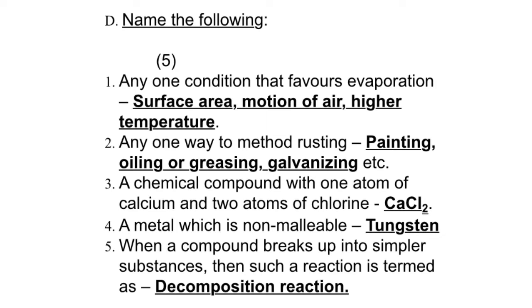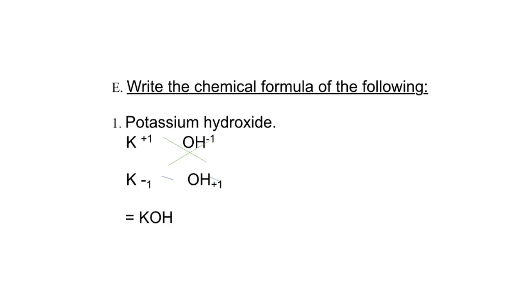Third, a chemical compound with one atom of calcium and two atoms of chlorine is known as calcium chloride - formula is CaCl2. Fourth, a metal which is non-malleable is tungsten. Fifth, when a compound breaks up into simpler substances, then such a reaction is known as decomposition reaction. For example, water - when we heat it or electrolyze it, because of electrolysis it breaks up into hydrogen and oxygen.